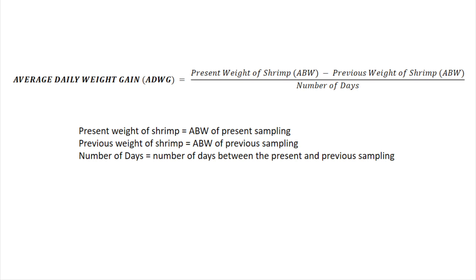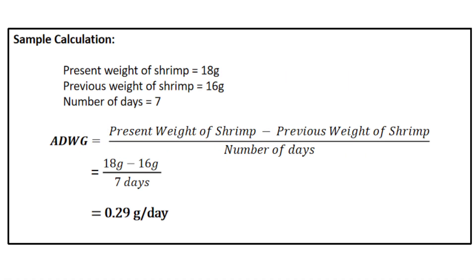After we get the ABW, we can now compute for the average daily weight gain using the formula: ADWG equals the present ABW minus previous ABW, divided by the number of days, where the number of days is the interval between the present and the previous sampling. For instance, present weight of shrimp is 18 grams minus previous weight of 16 grams, divided by 7 days interval between sampling. We get an ADWG of 0.29 grams per day.